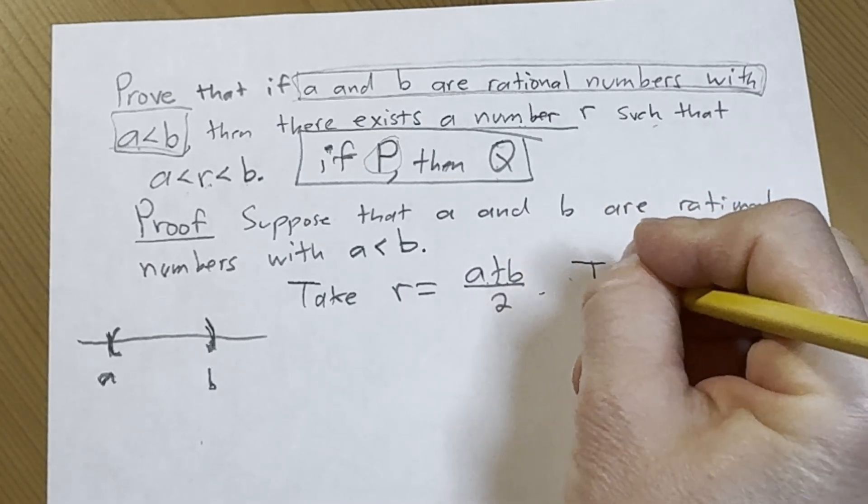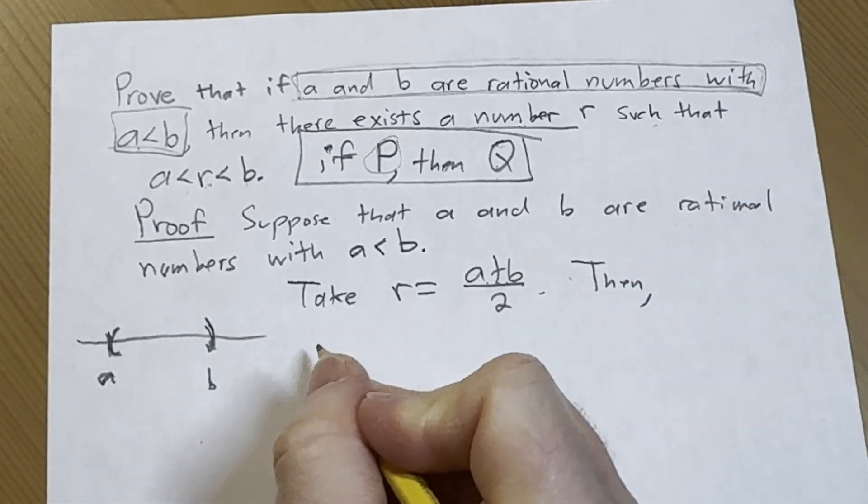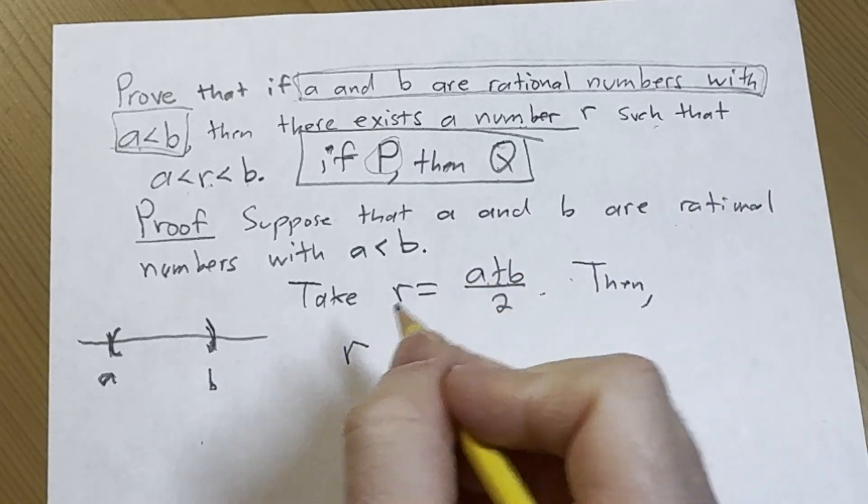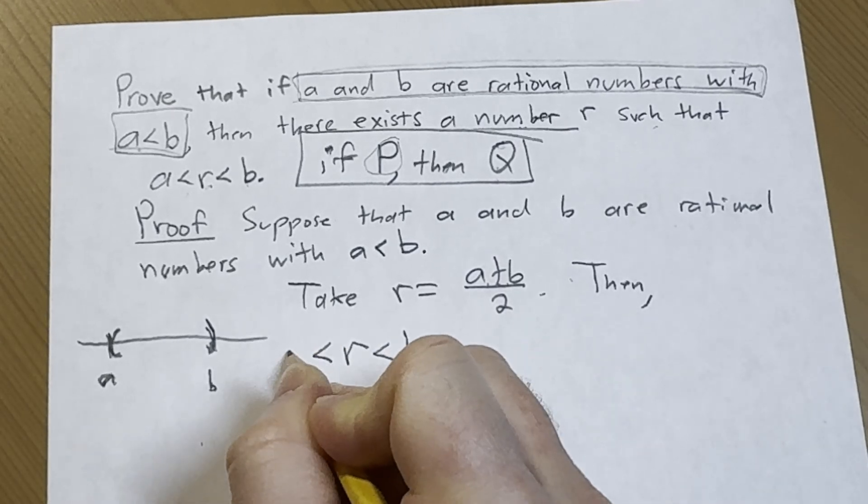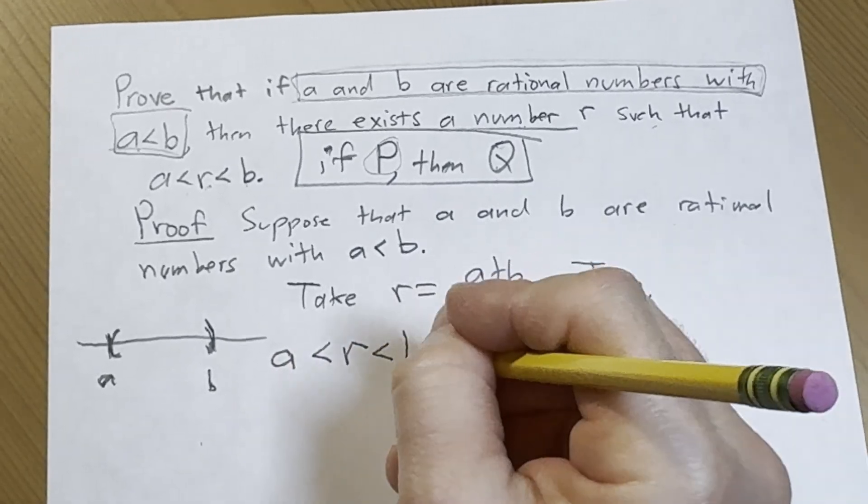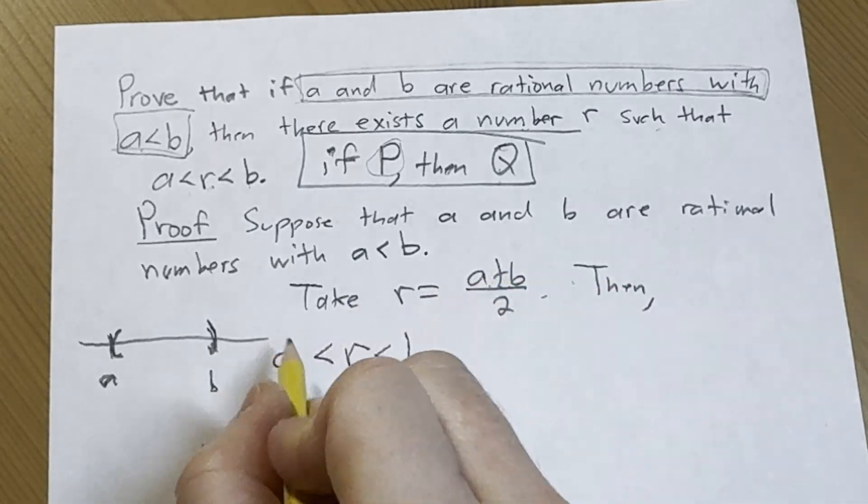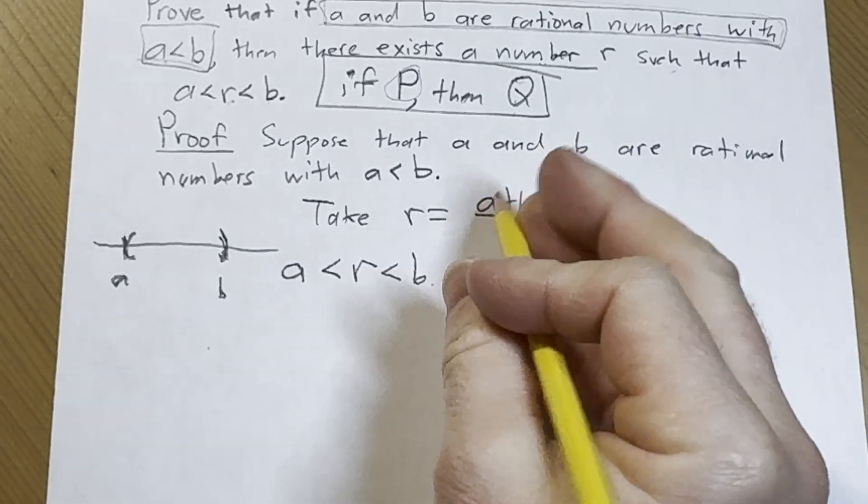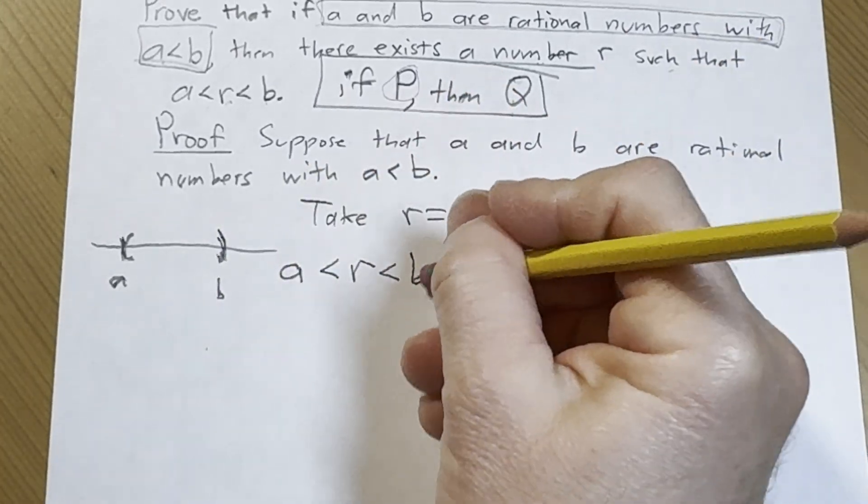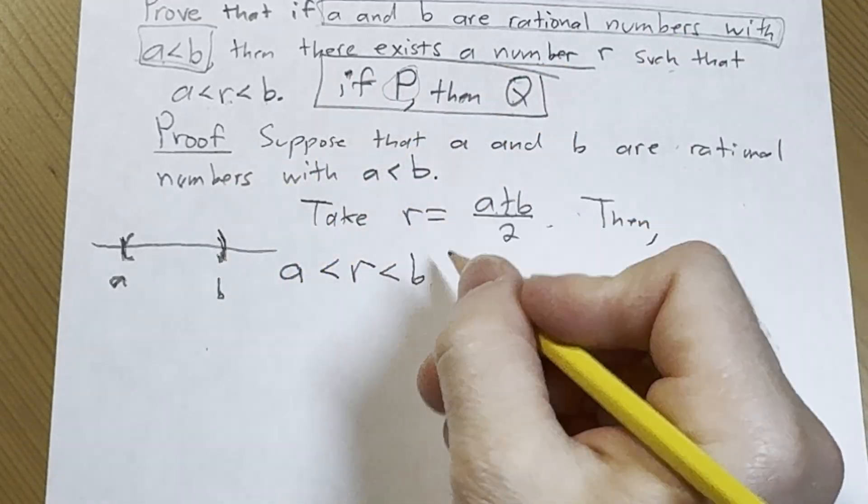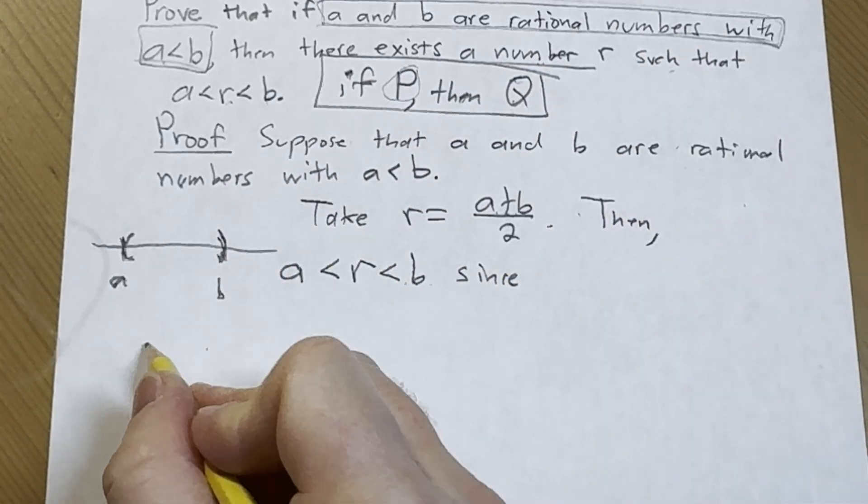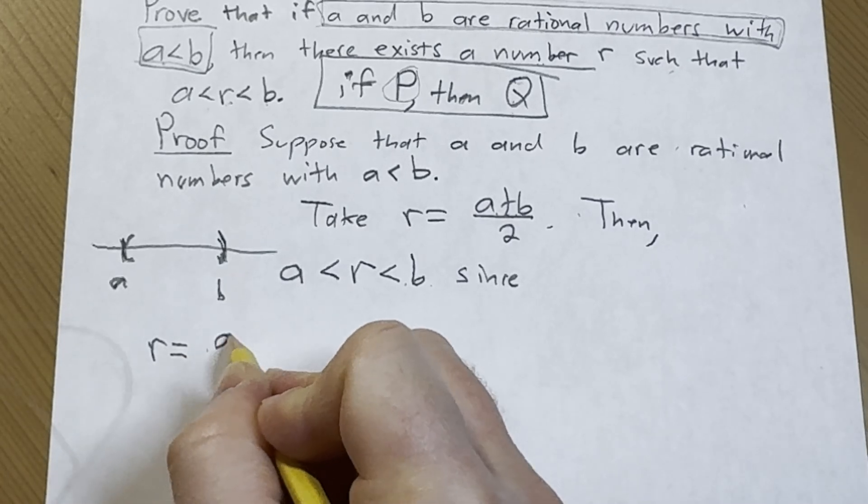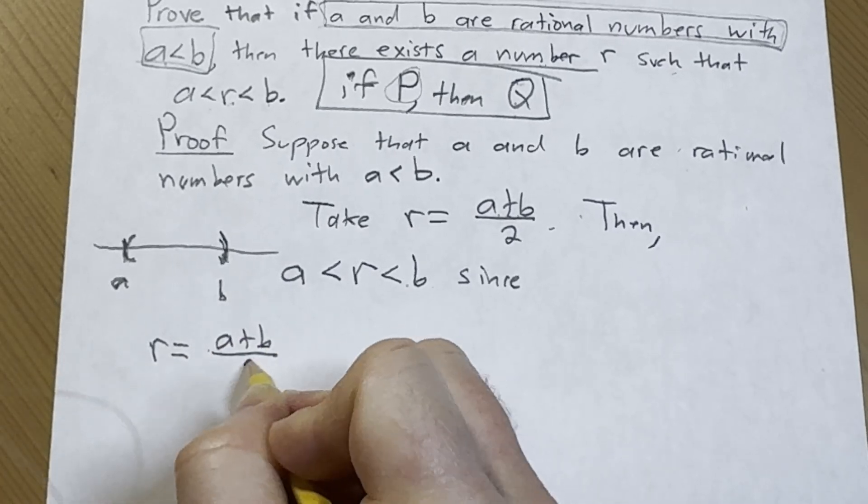Okay so it's actually between both of these numbers. So then r, which is (a+b)/2, is less than b and greater than a, and it's a number. And if you want to show this, if you want to be a little more precise here, let's just go ahead and do it here.